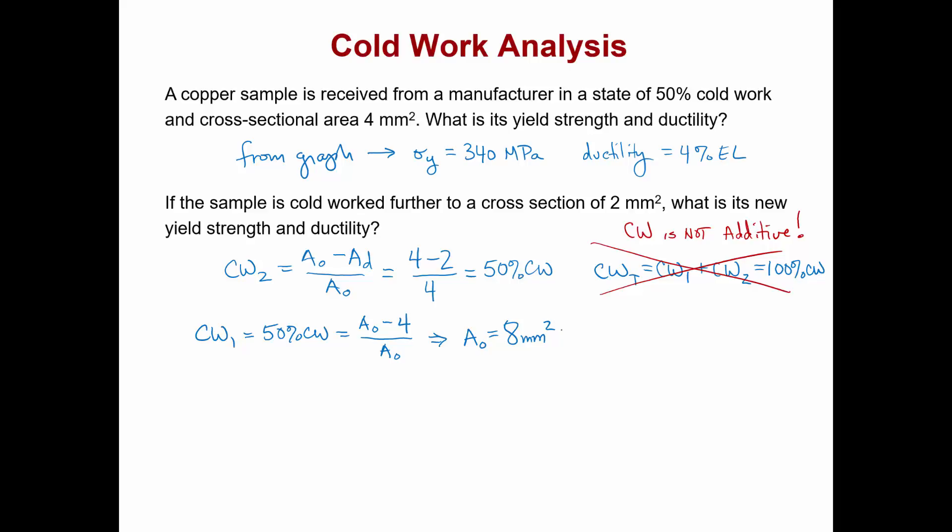Finally, we can take this original cross-sectional area and use that to calculate the total cold working of the specimen. We take the original cross-sectional area of 8 square millimeters, subtract our target value that we'd like to cold work to, 2 square millimeters, and divide by the original. The total cold working in this case for the specimen would be 75 percent cold work.